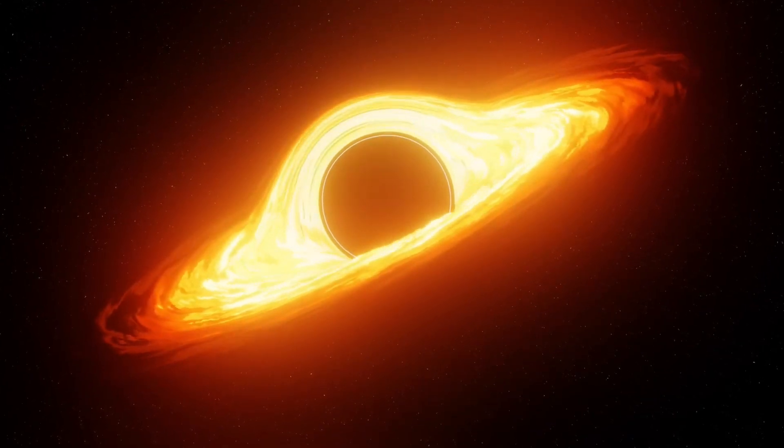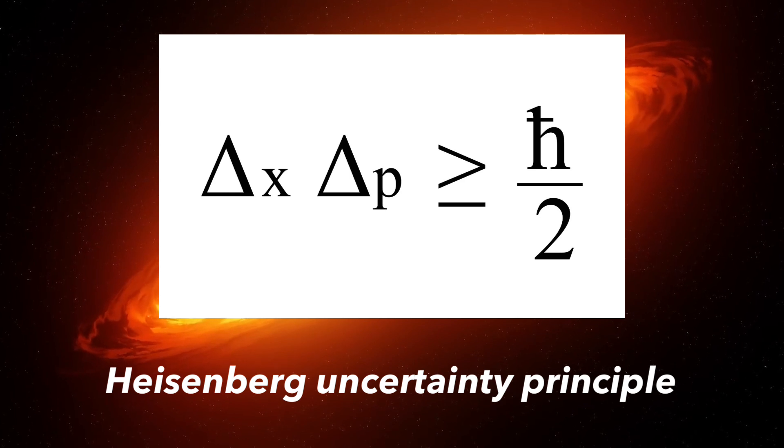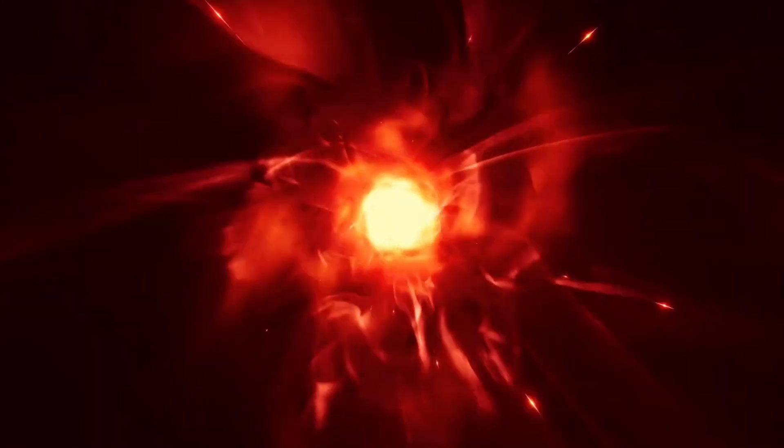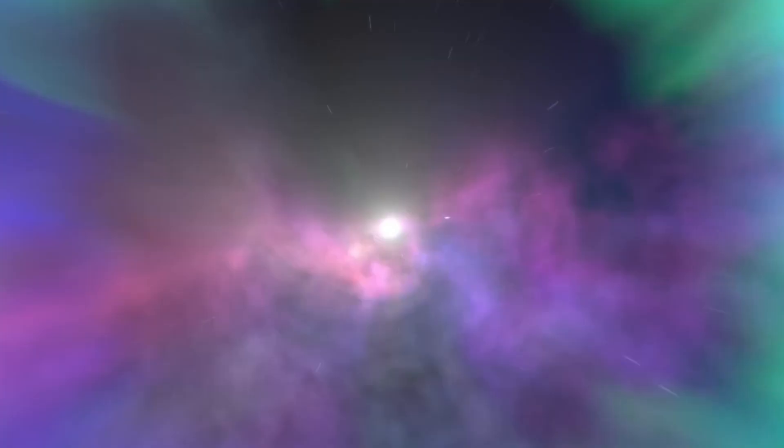This problem or important fact is known as the Heisenberg uncertainty principle. It states that there is a limit to the precision with which certain pairs of physical properties, such as position and momentum, can be simultaneously known.